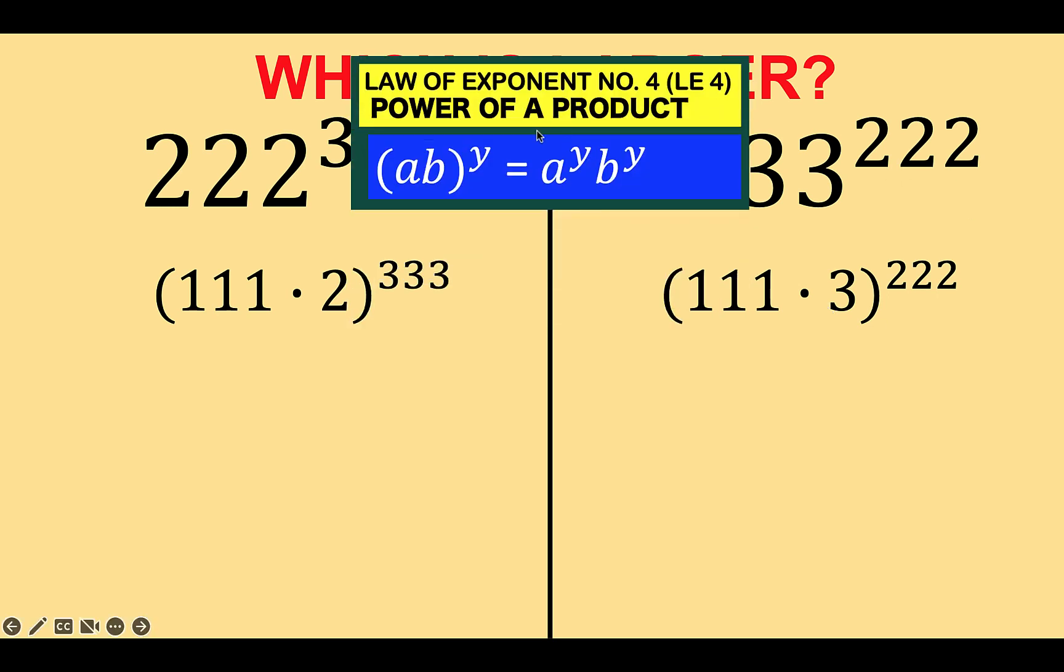Then let's recall this law of exponents number 4, the power of a product. We have a product 111 times 2 raised to exponent 333 and we also have here a product 111 times 3 raised to exponent 222. Now according to law of exponents number 4...